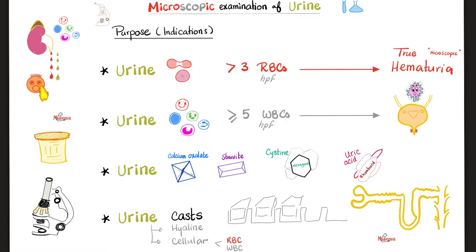Also, the microscope will help us see white blood cells in the urine. If I can see more than five white blood cells by high power field under the microscope, this means there is a urinary tract infection. What's the next step? Urine culture. Also, the microscope will help me see urine crystals or urine stones, as well as urine casts.